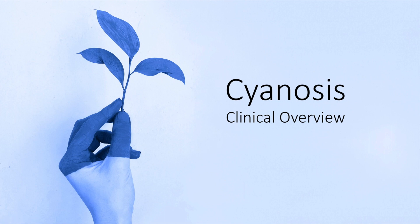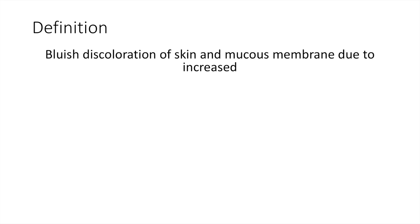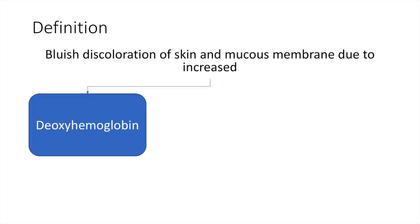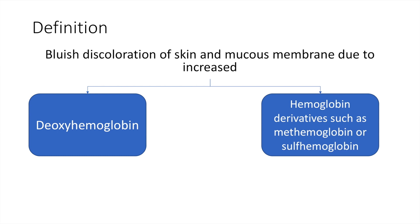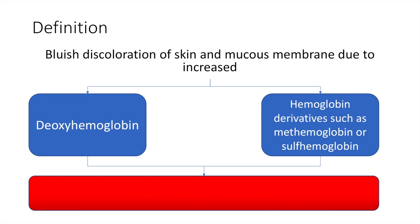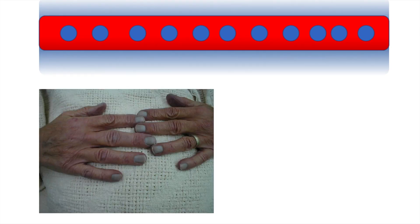Hello everyone, I'm Dr. Prashant and in this presentation we will talk about cyanosis. Cyanosis is defined as bluish discoloration of skin and mucous membrane, and it may be due to either increased deoxyhemoglobin or hemoglobin derivatives such as methemoglobin and sulfhemoglobin. When these derivatives or deoxyhemoglobin accumulate in the vasculature, the affected areas develop a bluish hue — this manifests as cyanosis, as seen here.